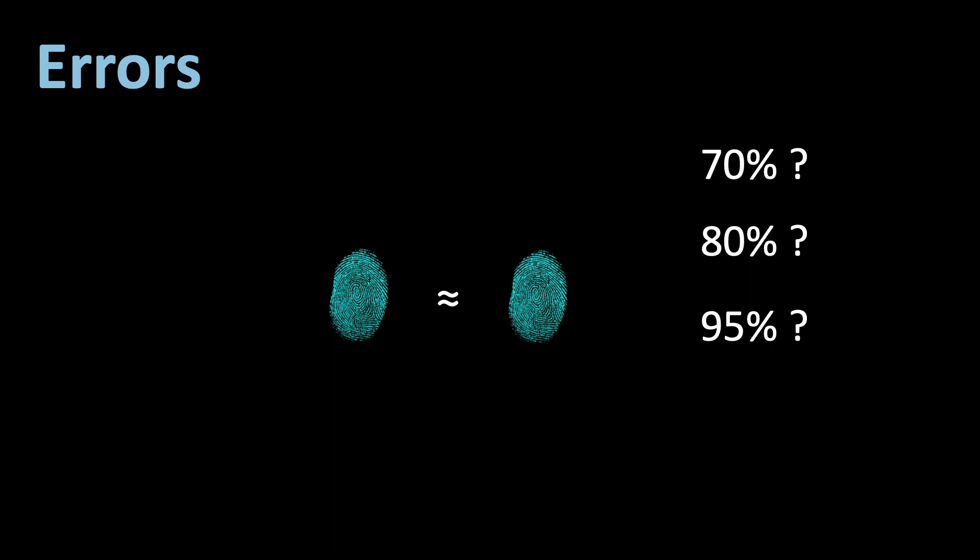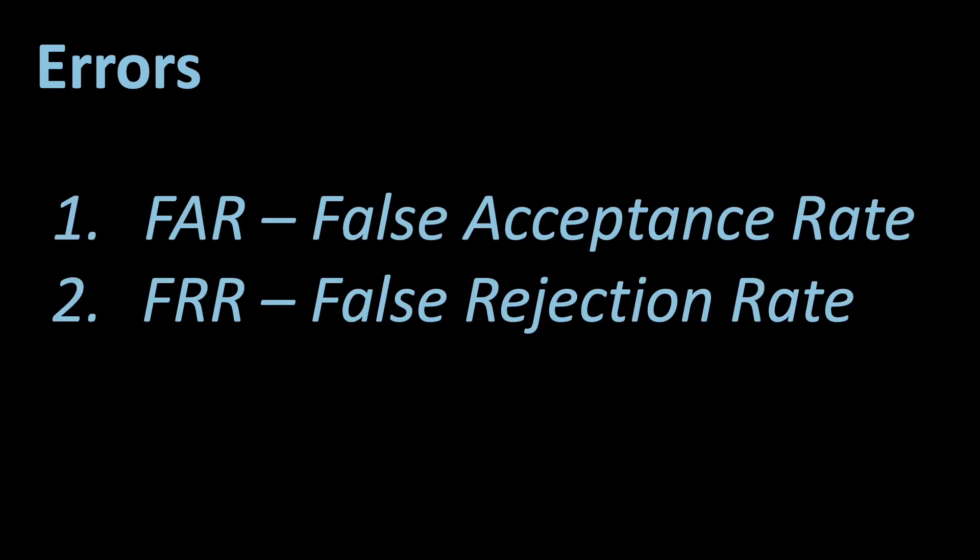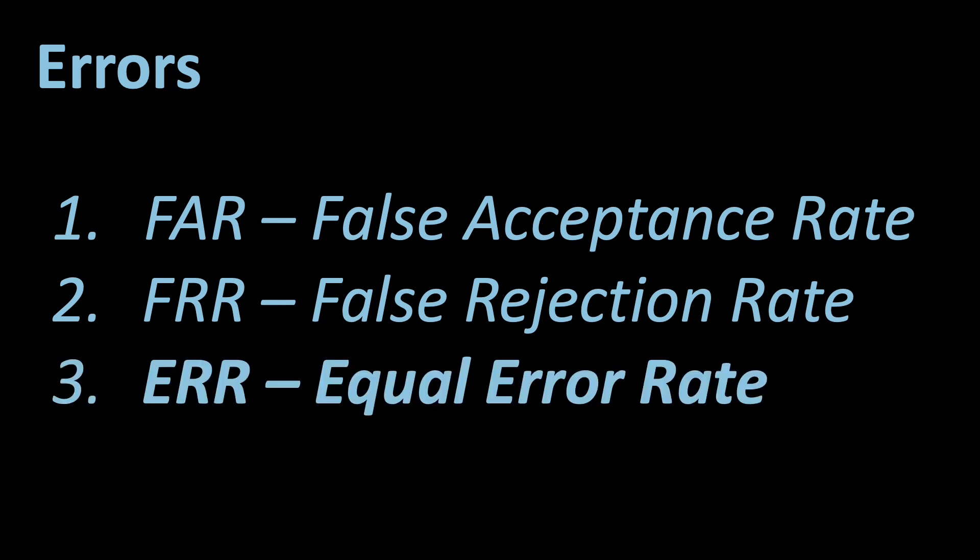To understand this, we need to look at two errors we are dealing with. First, we have the false acceptance rate. This means the rate of falsely authenticated users compared to the total rate of authenticated users. And second, the false rejection rate. This essentially means how many valid users did I not allow to authenticate. The point where these two errors meet is called the equal error rate.